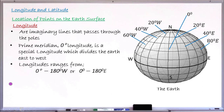Longitudes range from zero degrees to 180 degrees west, or zero degrees to 180 degrees east, as you can see in this drawing. Longitudes to the right of the prime meridian will have angles ranging from zero to 180 degrees with the direction east attached to them. For example, the first longitude could be 20 degrees east, the next could be 40 degrees east, another could be 80 degrees east, and so on — the angle keeps increasing up to a maximum of 180 degrees.